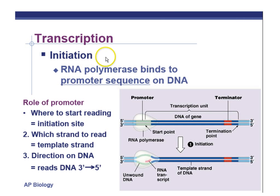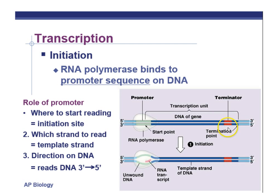The first step in transcription is for RNA polymerase to bind to a promoter region on DNA's template strand, as represented in this picture. Then RNA polymerase is going to transcribe the gene until it reaches the terminator. Once the RNA polymerase hits the terminator sequence on DNA, it's going to detach and transcription is done.